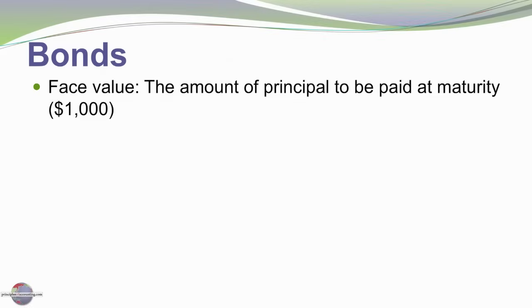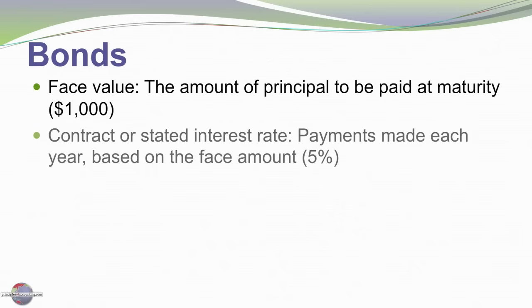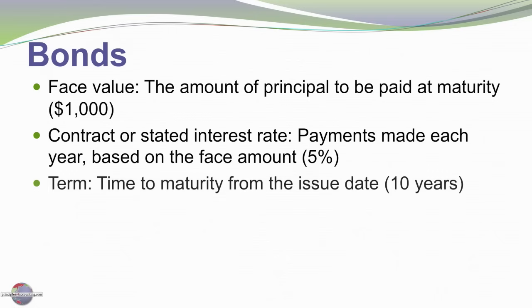There are some terms that are important to know when you consider bonds. The face amount is what's to be repaid at maturity, typically a $1,000 amount. The contract's stated rate of interest is the payment contractually agreed to, for example 5% per year, or perhaps paid semi-annually at 2.5%. The term is the time to maturity, for example 5, 10, 20, or 30 years.